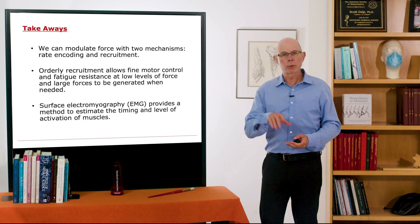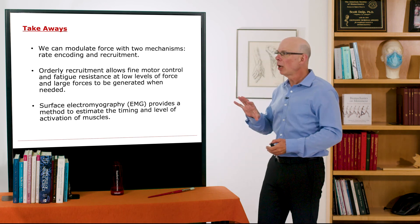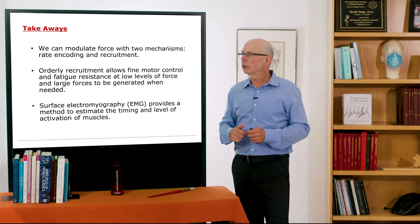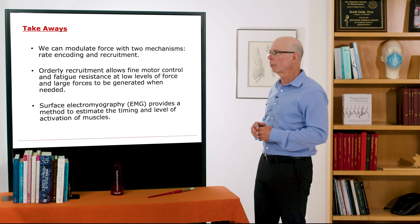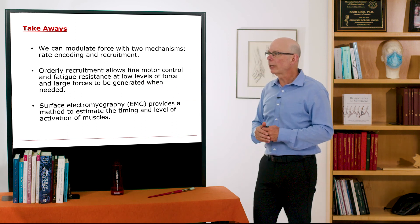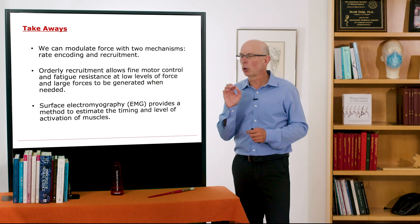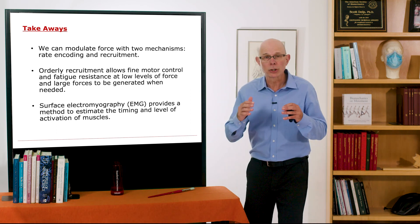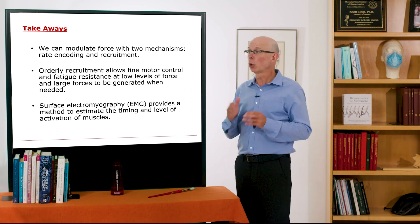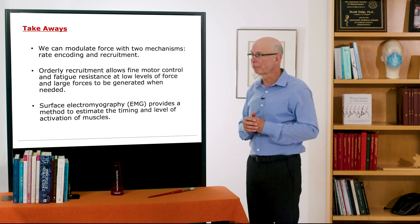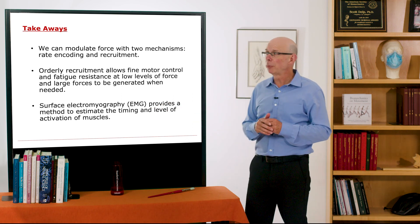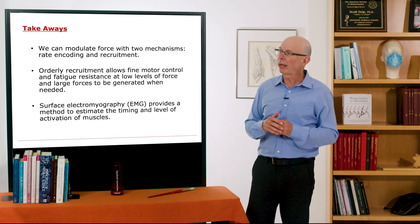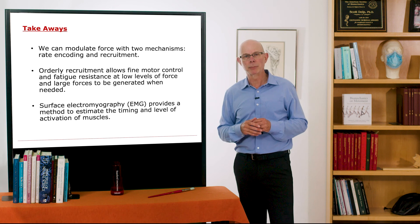Key takeaways from this section: First, we have two ways to modulate force — rate encoding and recruitment — where recruitment is the primary mechanism. Second, orderly recruitment allows fine motor control and fatigue resistance at low forces, but also allows large forces for short durations when needed. Finally, surface EMG recordings provide a method to estimate the timing and level of muscle activation.